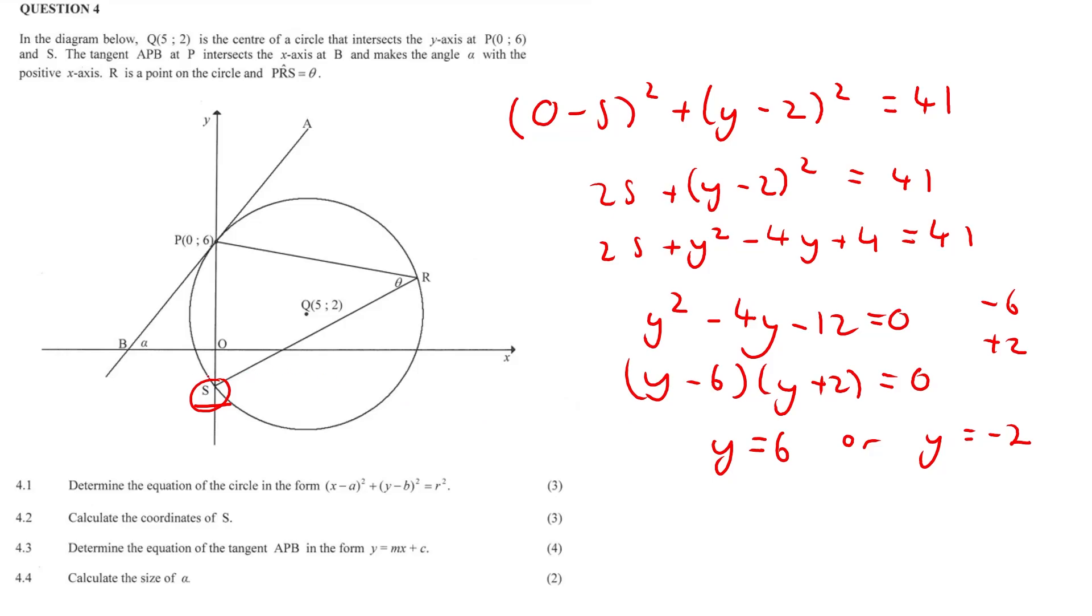And if you look very carefully, this Y is negative, it's underneath the x-axis. So that is not equal to, and our only answer is y equals negative 2. Therefore, S has the coordinates x equals 0 and y equals negative 2. And that was question 4.2.